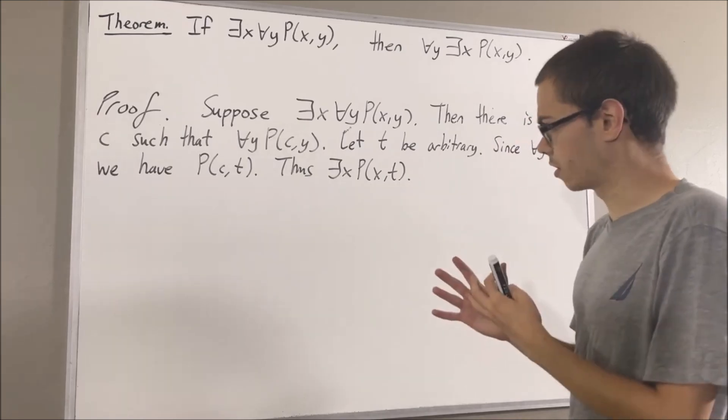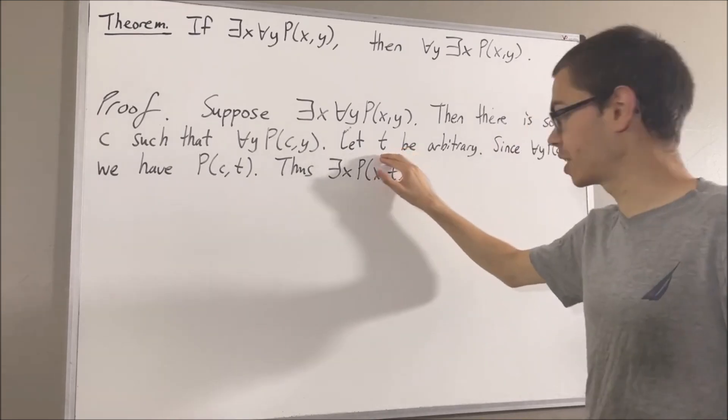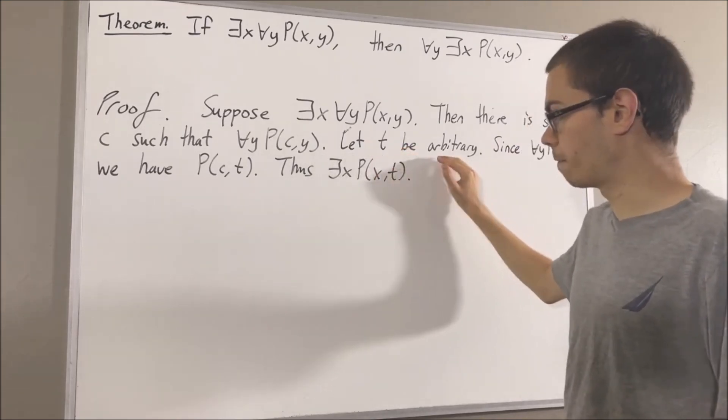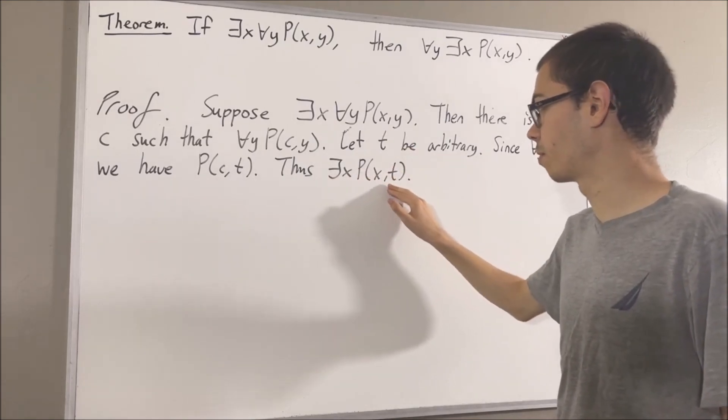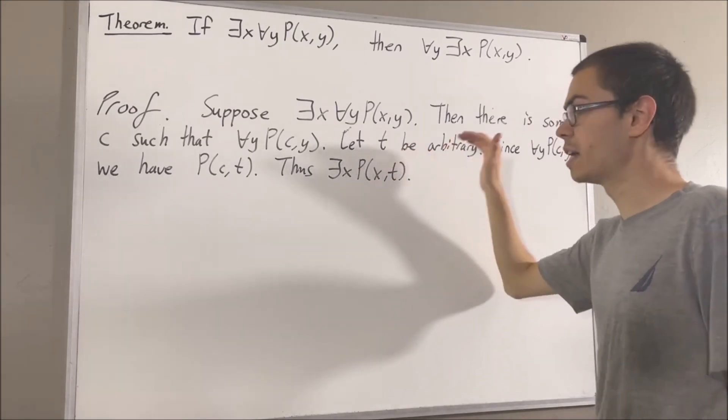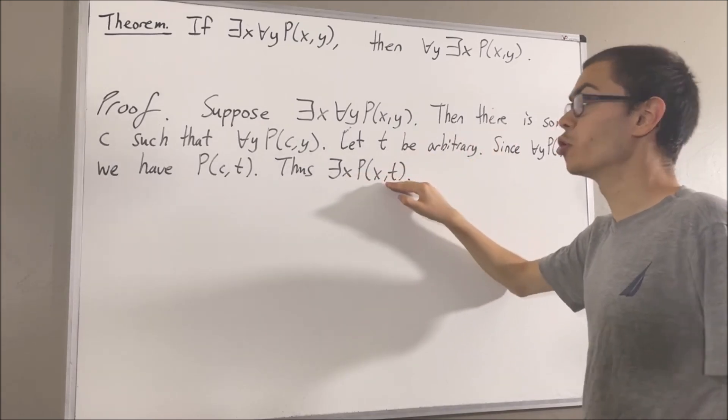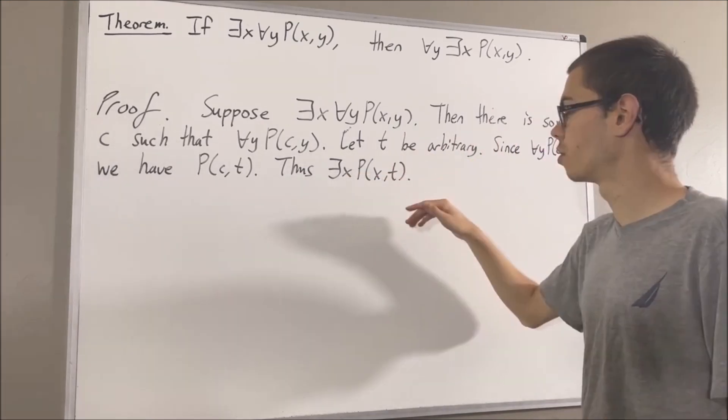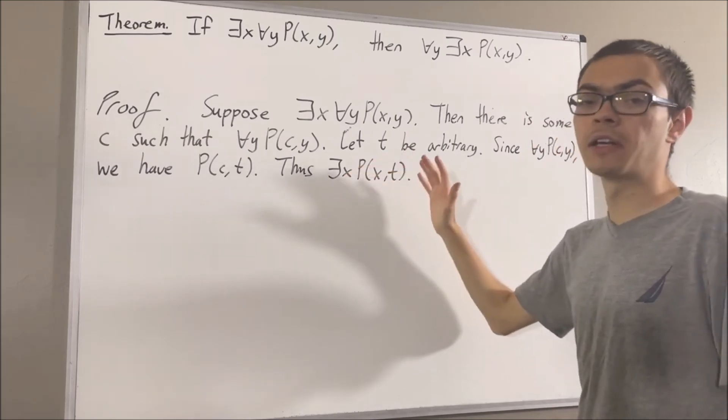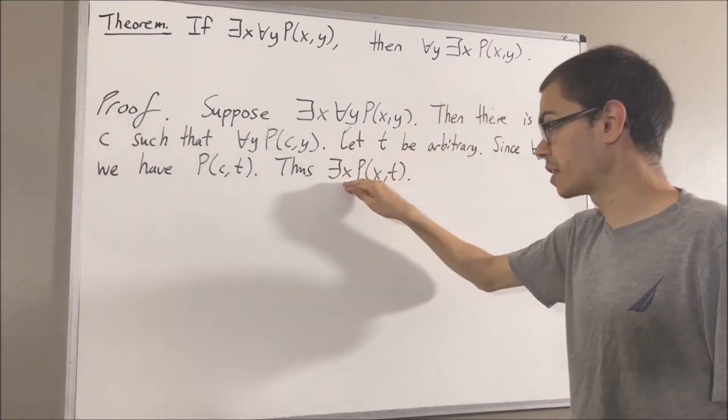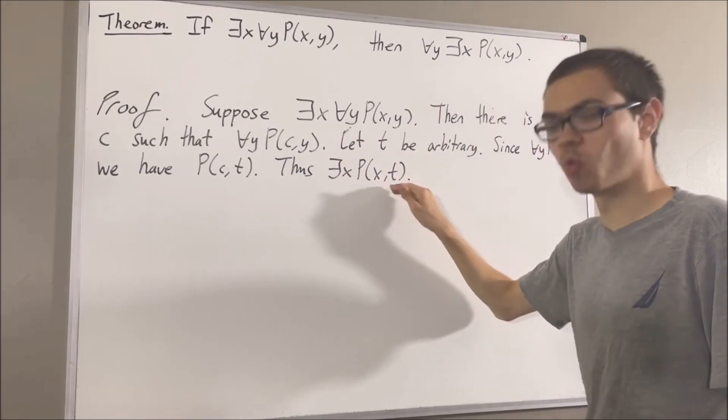So putting this together, we gave ourselves an arbitrary object t. From here, it follows that there exists an x such that P(x,t). Since t was arbitrary, this means that this statement is true no matter what t is. So really, this tells us that for all objects y, there exists an x such that P(x,y).